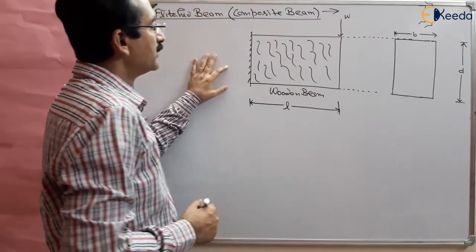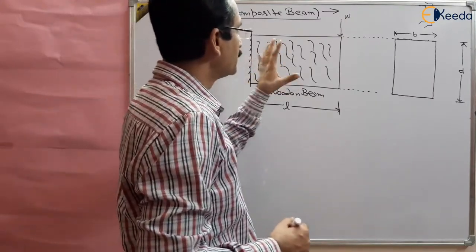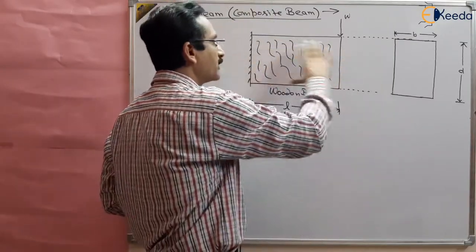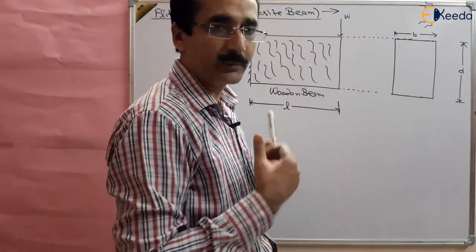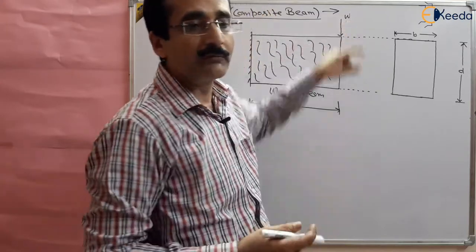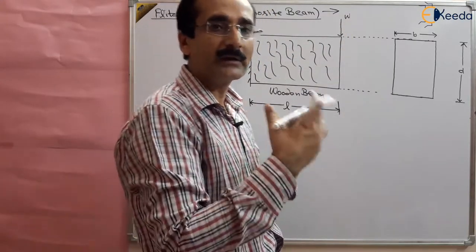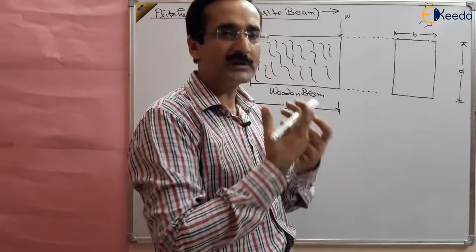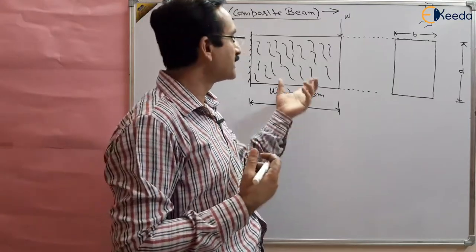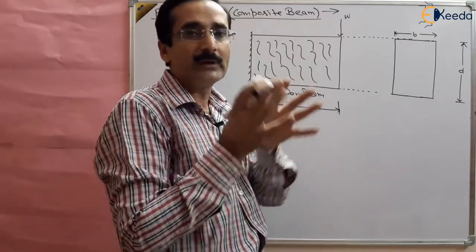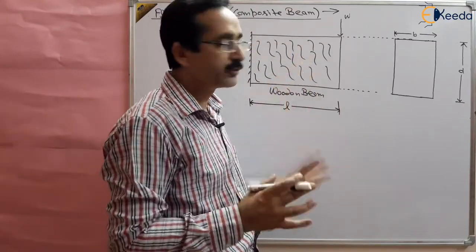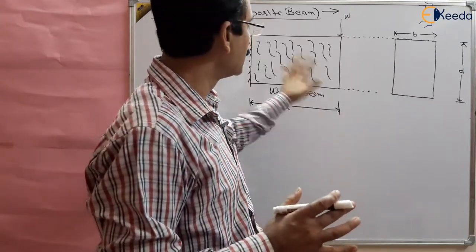So what we can do is, we can use metal plates all along its length, so that it will become a composite beam. The bending moment obtained from load W will be shared by the steel material also. So some stresses will be developed in the steel and some in the wood, and the wood will become safe under loading.